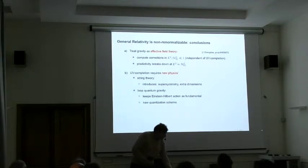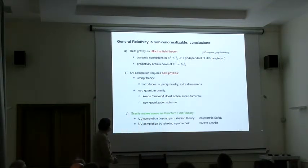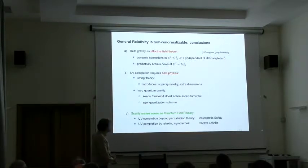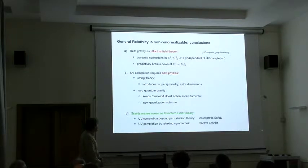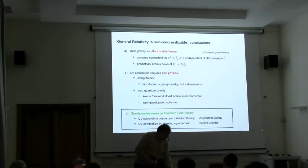Asymptotic safety takes a different take on this story. The conjecture is that gravity still makes sense as a quantum field theory. The failure is not in quantum field theory per se. It's a failure of perturbation theory. We are looking for a non-perturbative UV completion of the theory. This will set the topic of the talk.